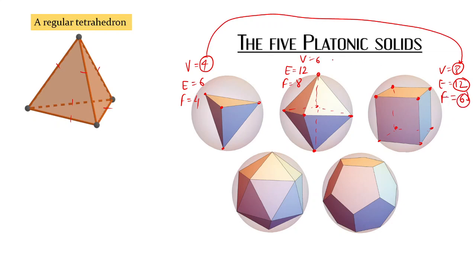Six is also appearing as the number of vertices of an octahedron, and it is also appearing as the number of faces in an octahedron, and it is also the number of vertices in a cube.